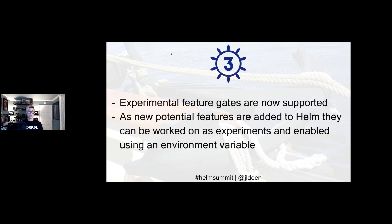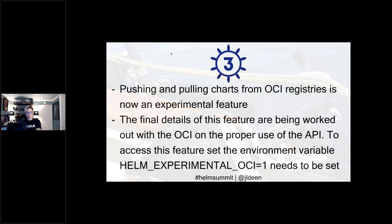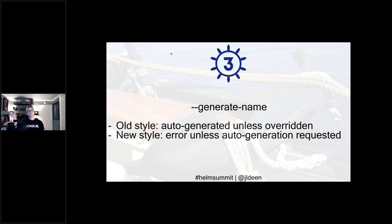There's another big change that really opens the door to a lot of future potential: experimental feature gates are now supported. You can enable certain experimental features using an environment variable. An example is OCI charts — Helm 3 now supports OCI registries. To enable it, just set the environment variable `HELM_EXPERIMENTAL_OCI` to `1` for true, or `0` to turn it off. There's a great session from Josh Dolinski at Helm Summit about OCI registries if you want to learn more.